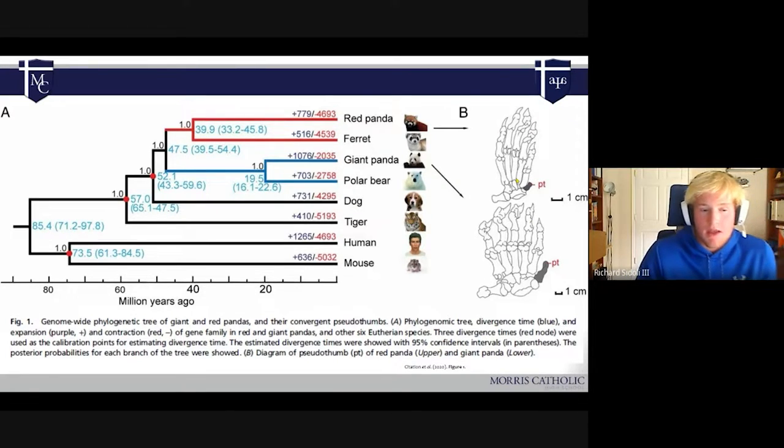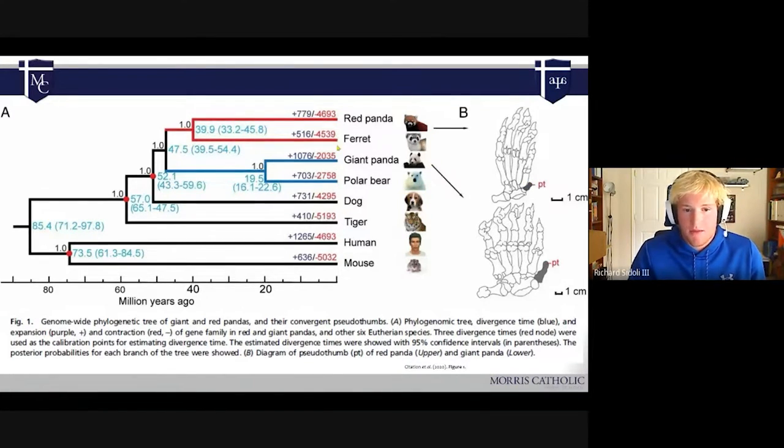This is showing an actual anatomical similarity between the two, despite their distance in terms of genetic relation. They both have this bone that isn't actually a digit, but simulates a lot of the function of a digit. They end up calling it a pseudothumb in the paper, and they go into how it developed and why they think it might have actually developed in such a manner.